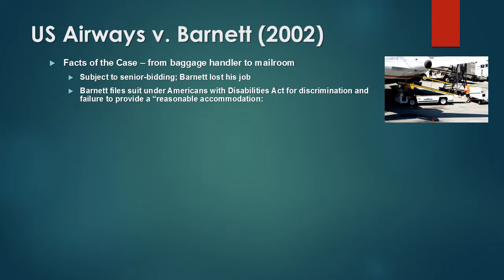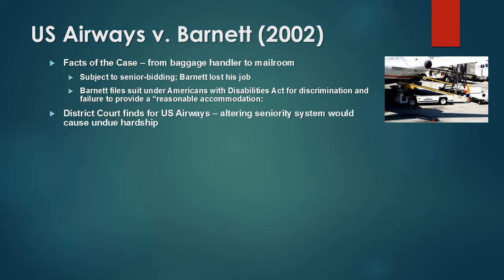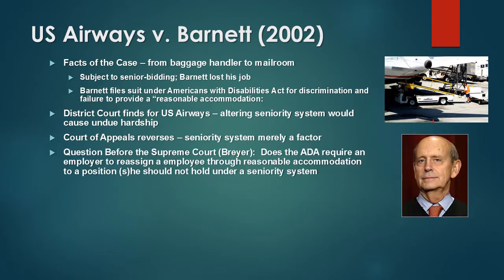The problem was that subsequent to his request, the mail room position became subject to seniority-based employee bidding under US Airways' seniority system. He moved from the baggage handler position into the mail room using his seniority, but was not senior enough in the mail room to retain his position. Unable to go back to his job as a baggage handler, he lost his job. The district court found for US Airways, saying that altering the seniority system would cause undue hardship to the employer and every other non-disabled employee. The court of appeals reversed, saying the seniority system is merely a factor to be considered when making a reasonable accommodation under the ADA, and found for Barnett.